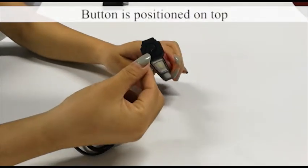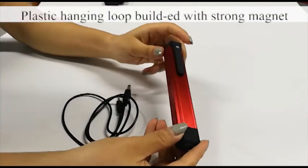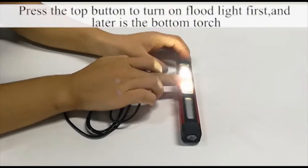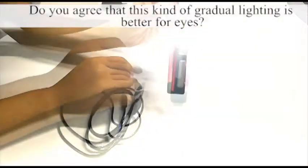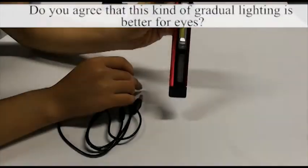Button is positioned on top. Plastic hanging loop built with strong magnet. Press the top button to turn on the floodlight first, and later the bottom torch. Do you agree this kind of gradual lighting is better for eyes?